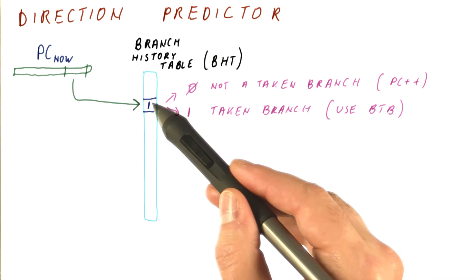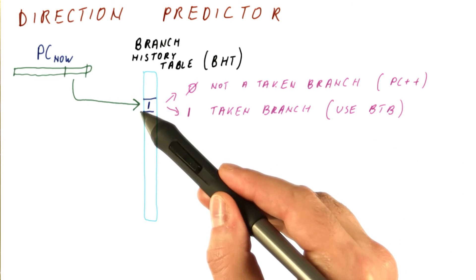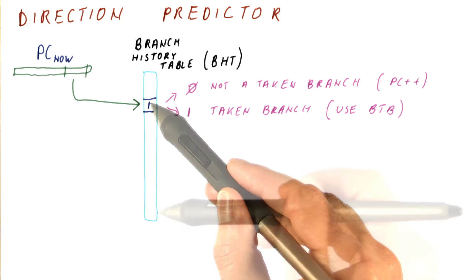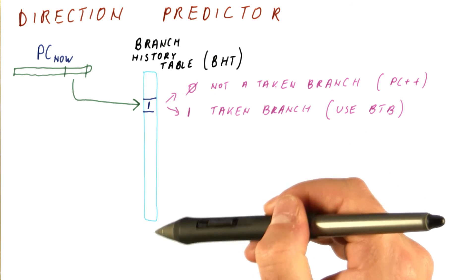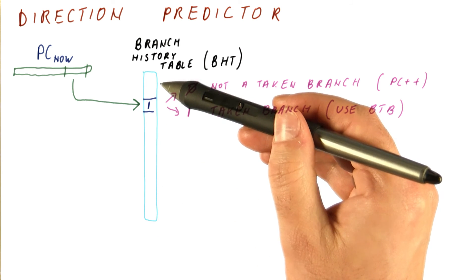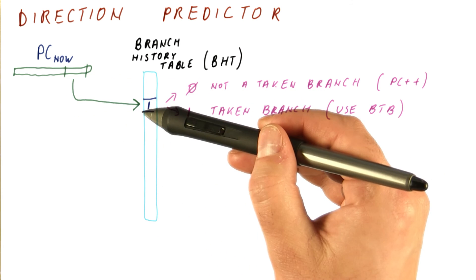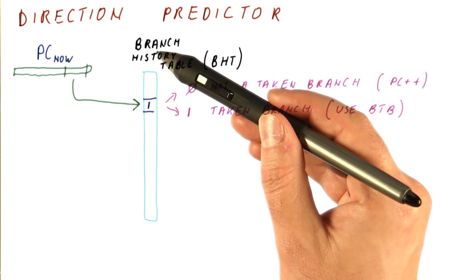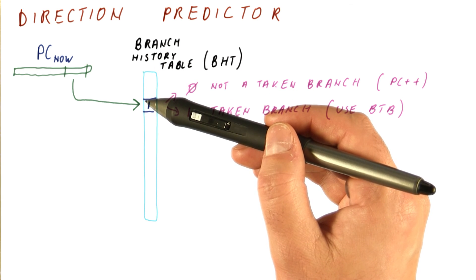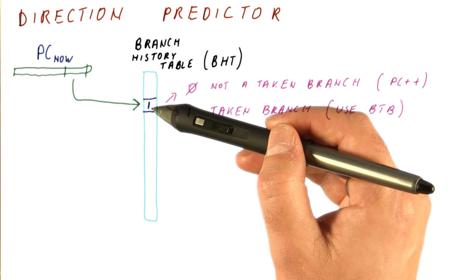Because an entry here can be only a single bit, this table can be quite large. So we can have lots of instructions have entries here, avoiding conflicts between instructions that commonly execute, while still reserving the small BTB, which has much fewer entries, only for branches in that code.